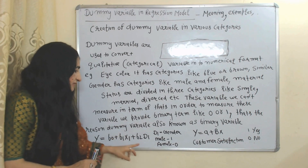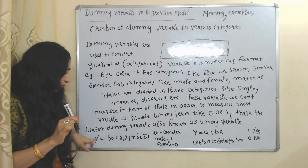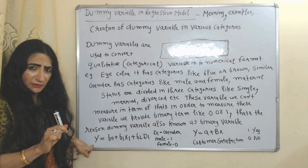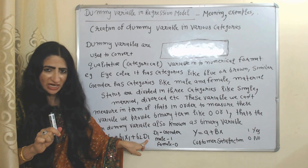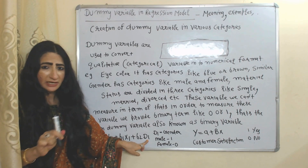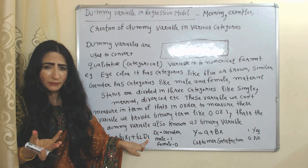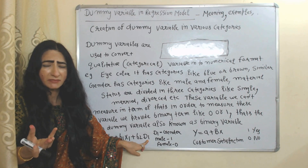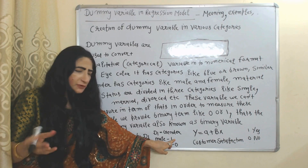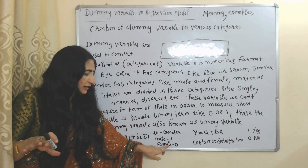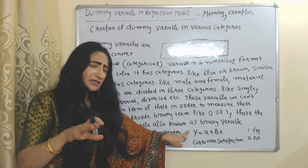Here you can see our independent variable is a dummy. The dependent variable is income, which depends on experience and gender. We cannot measure gender in terms of numbers, so we provide a binary term like zero or one. For example, for male we will write one, and for female we will write zero.